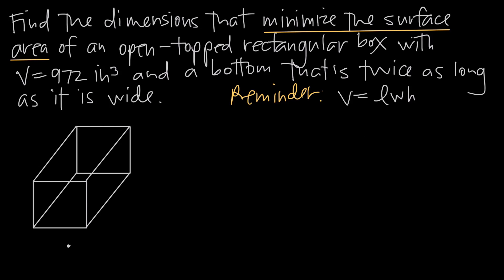The surface area of a rectangular box — if we call the dimensions width, length, and height — the area of the bottom is width times length. For an open-topped box, we don't multiply by 2 for a top; we just consider the area of the bottom, W times L.